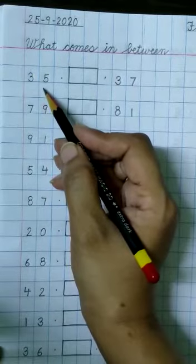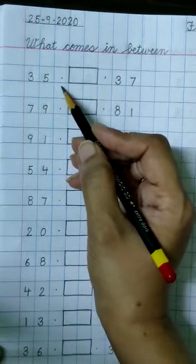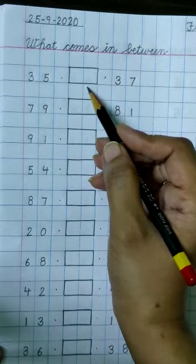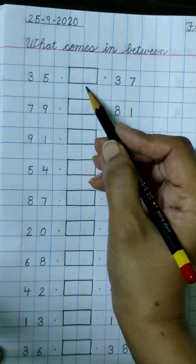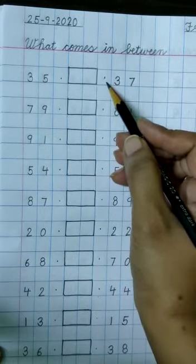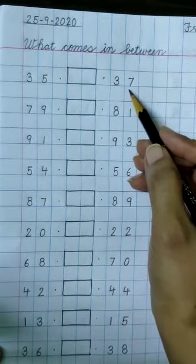Then write number 35. Put a dot here. Then make a box. As you know we will write between number in this box. Then again put a dot and write number 37.